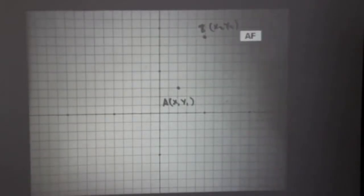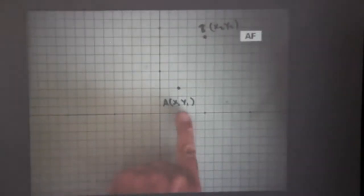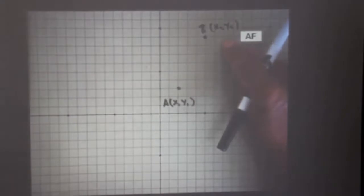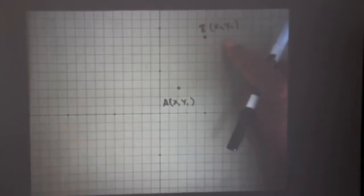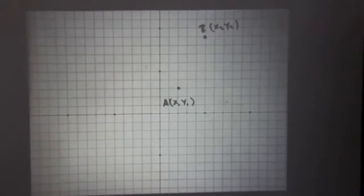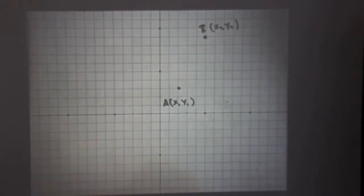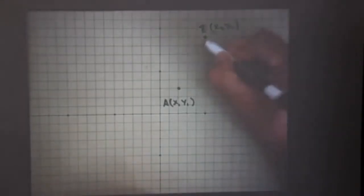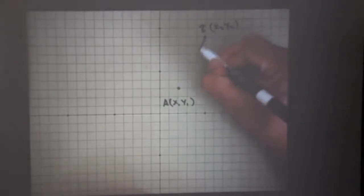And again, notice the subscripts. The sub ones for this one, the sub twos, x2, y2 for this. In math, when we have subscripts, that means these are fixed points in space. They don't move like a variable would all over the place even though the variable letters x and y are there. By attaching the subscript that implies to our math people that these two points are fixed in space.